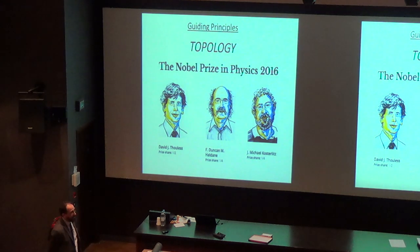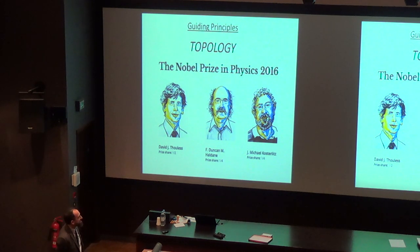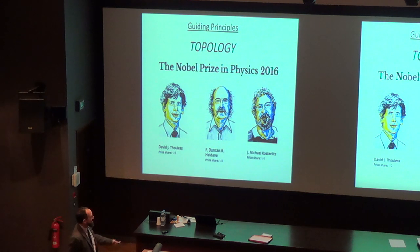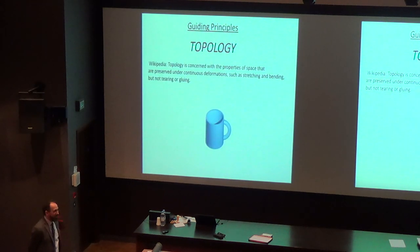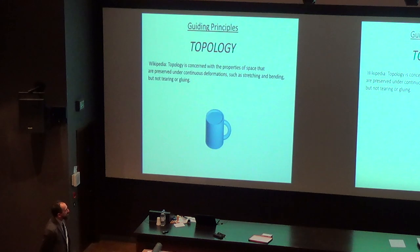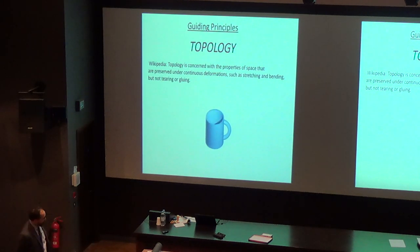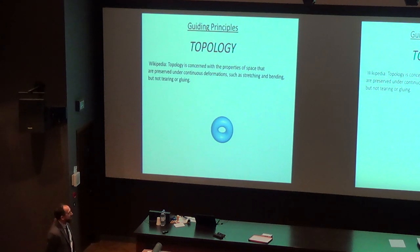Topology earned the Nobel Prize in Physics in 2016 for these three people — all British by birth and all living in the United States. I'm going to talk mainly about the work of David Thouless, who received half the prize. Topology is concerned with the properties of space that are preserved under continuous deformations such as stretching and bending, but not tearing or gluing. The classic picture is the donut turning continuously into a coffee cup — this can be done without tearing or gluing, so topologically they are equivalent.